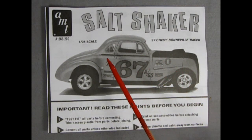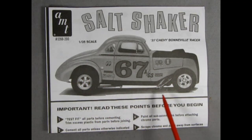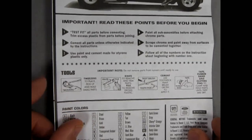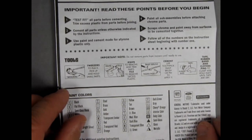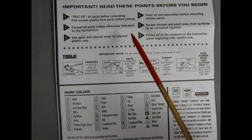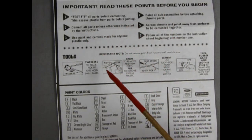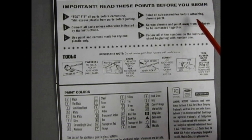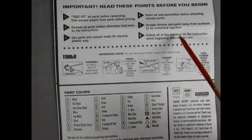Here we have the instruction sheet for the salt shaker and you can see a nice side profile of the model just like on the box side. And then we have our important read these points before you begin. Just like so you can see it's got number one test fit all parts before cementing, two cement all parts unless otherwise indicated, three use paints and cement made for styrene plastic, paint all sub assemblies before attaching chrome parts, scrape chrome and paint away from surfaces to be cemented together, and follow all the numbers on the instruction sheet beginning with number one.